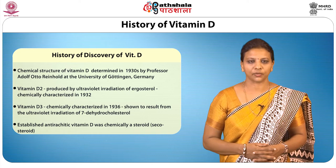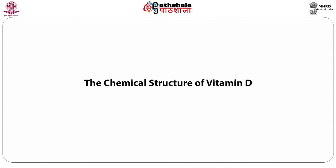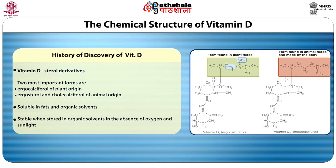Compounds with vitamin D activity are sterol derivatives. The two most important forms are ergocalciferol of plant origin, derived from plant sterol and ergosterol, and cholecalciferol of animal origin from 7-dehydrocholesterol present in mammalian skin. The conversion occurs on exposure to UV rays from sunlight. Vitamin D is soluble in fats and organic solvents ranging from hexane to methanol, and is stable when stored in organic solvents in the absence of oxygen and sunlight.